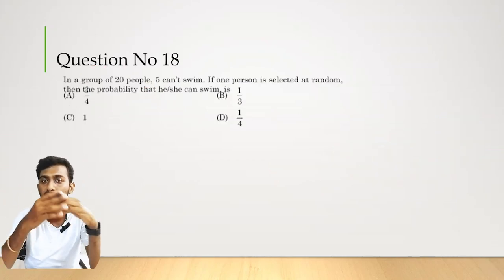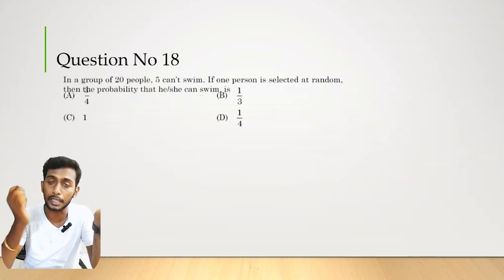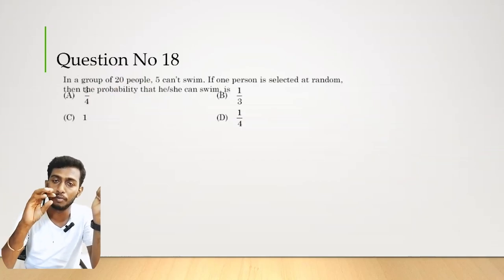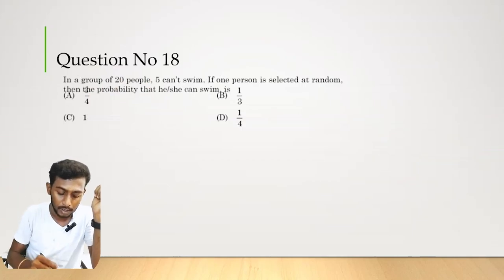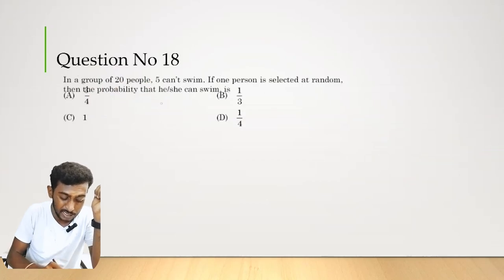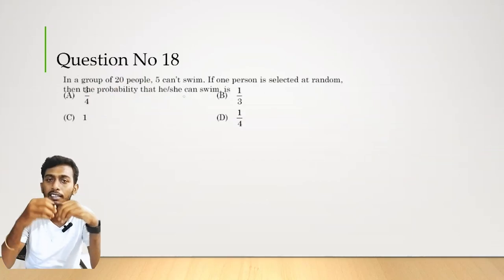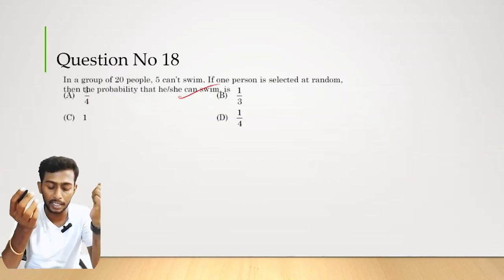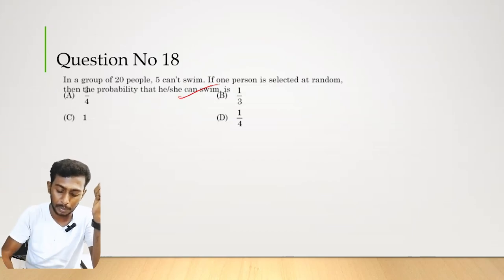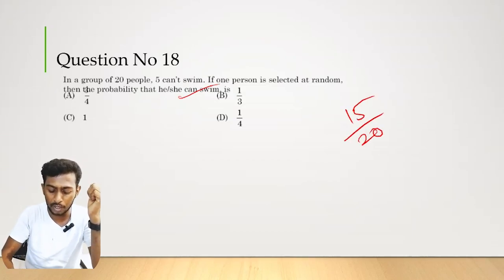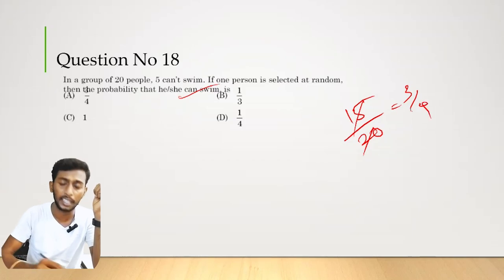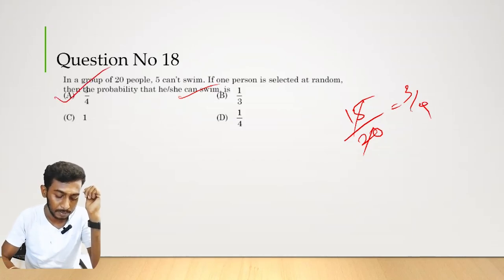Question number 18. In a group of 20 people, 5 cannot swim. One person is selected at random. Probability that he or she can swim: swimmers = 20 − 5 = 15. Probability = 15/20 = 3/4. Option A is the correct answer.